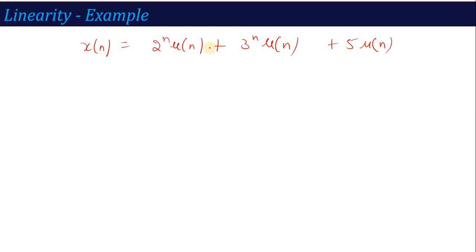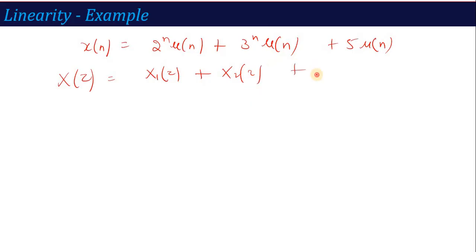Here this is signal plus signal plus signal, so if I need the Z-transform, then by linearity it is X1(z) + X2(z) + 5 * X3(z), where 5 is a constant term — I keep 5 as it is — and the Z-transform of u(n) is our X3(z). As I was telling you, we already learned the basic Z-transform and can use it here.